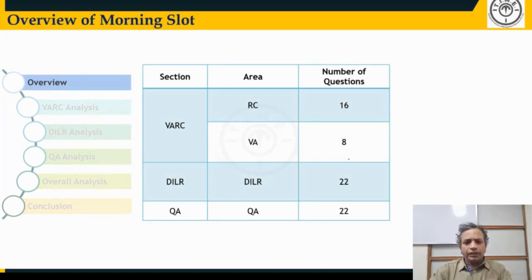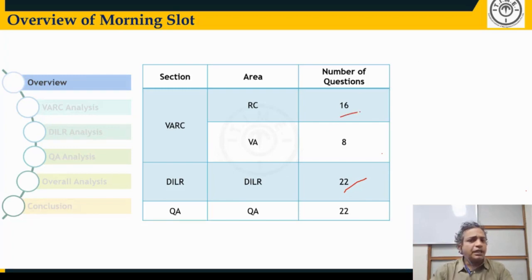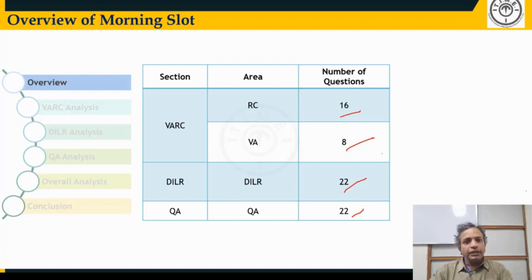The total number of questions in the exam has gone up from 66 to 68, majorly because of the increment in the DILR section — from 20 to 22 questions. In the other two sections there's no change: 16 RC questions and 8 VA questions, same as the last three CATs. In Quant also, 22 questions, same as the last three CATs. So for the last four CATs including CAT 24, VARC and Quant unchanged; DILR went up by two questions.